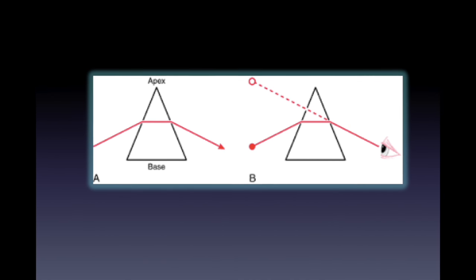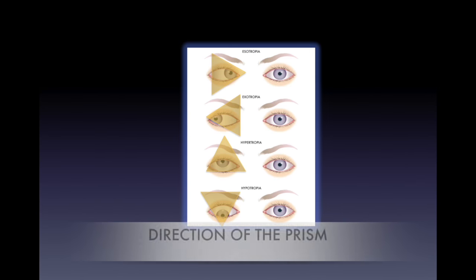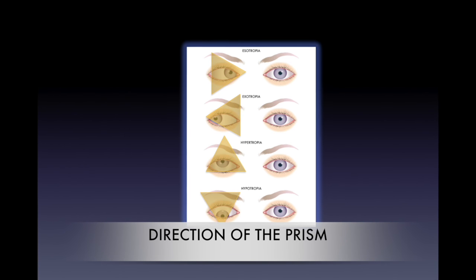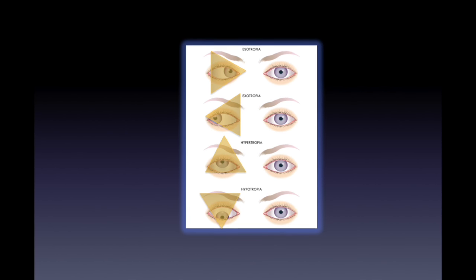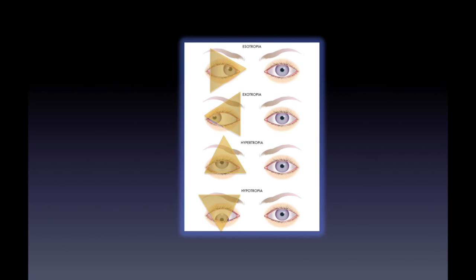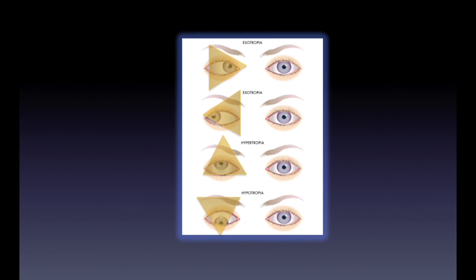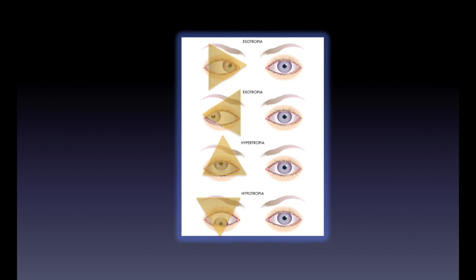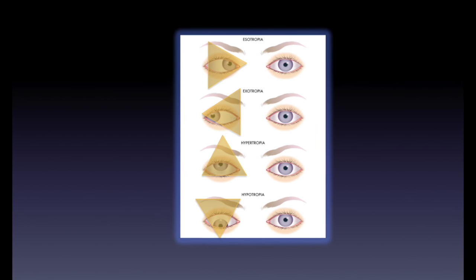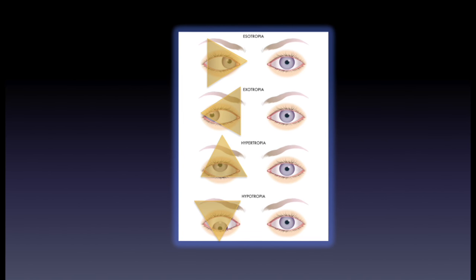There will be no movement of the eyes when the selected prism causes the image to fall on the fovea. The base of the prism is oriented according to the result of the cover test. The base should be base out for an esodeviation, base in for an exodeviation, base down for a hyperdeviation, and base up for a hypodeviation.